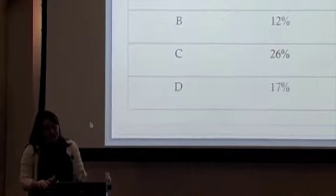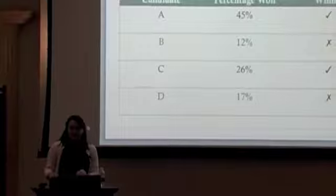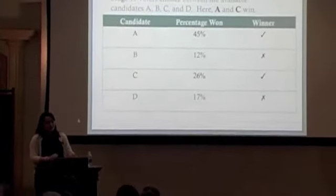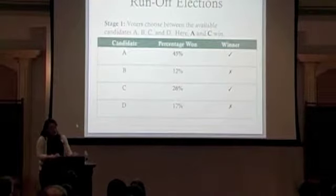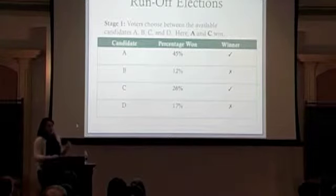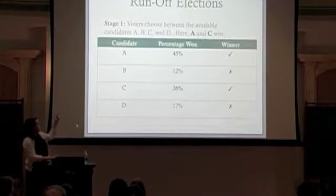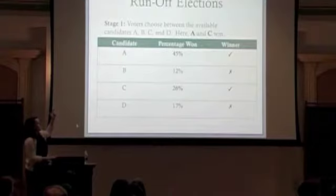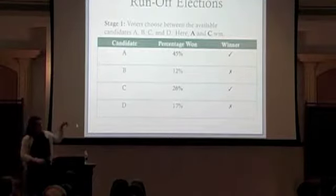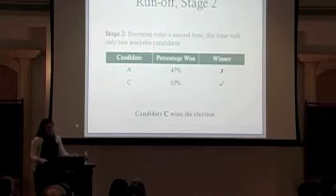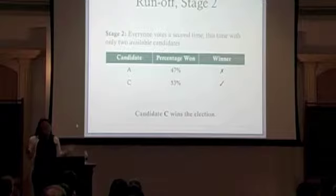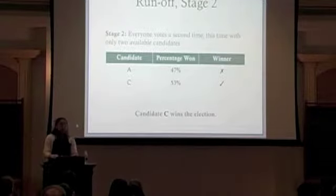A runoff election has two parts. In the first stage, individual voters choose from a pool of candidates and pick their top choice. Those votes are tallied and the top two candidates move on to the second round. In this example, candidates A and C won the highest percentage of votes, so those two candidates move on. In the second stage, we take another vote and voters choose between the remaining two candidates to decide the winner.